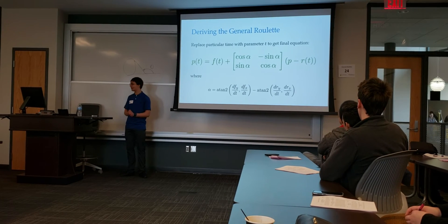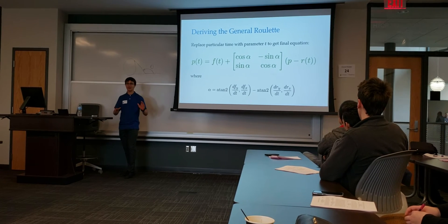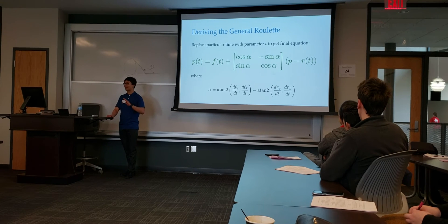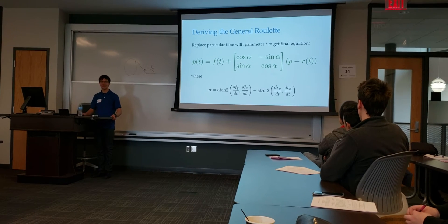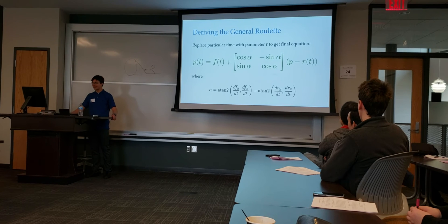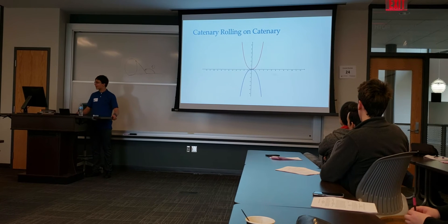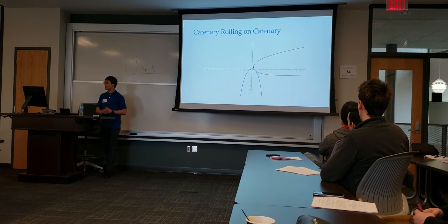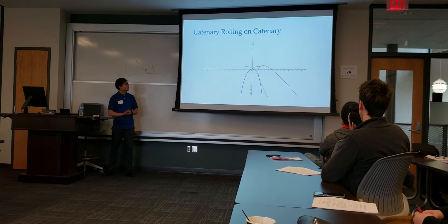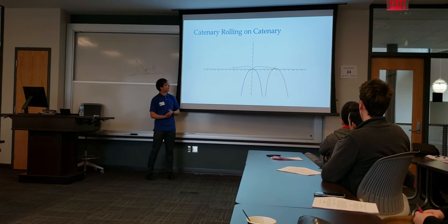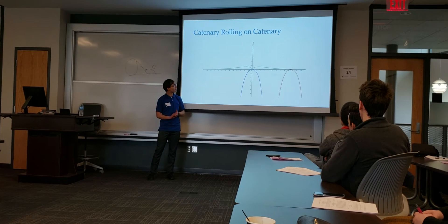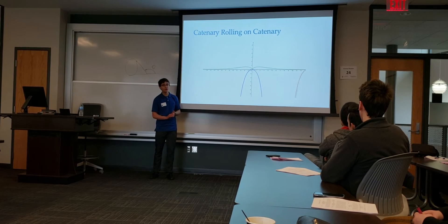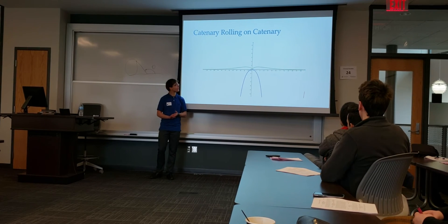Now we can create example animations. The first is a catenary rolling on a catenary, where we are looking at the generating point following the vertex of the catenary, and it creates a nice Pringles mustache-looking curve.